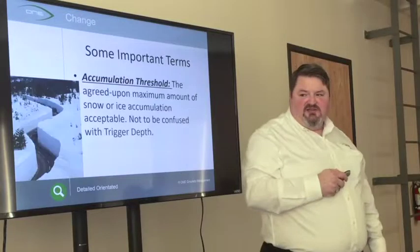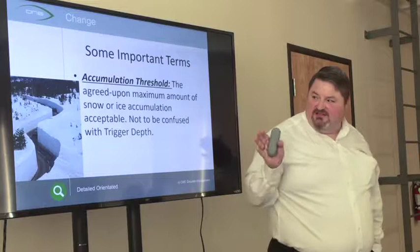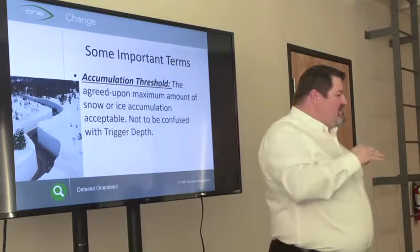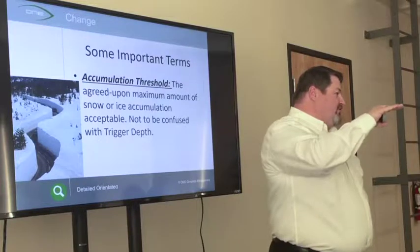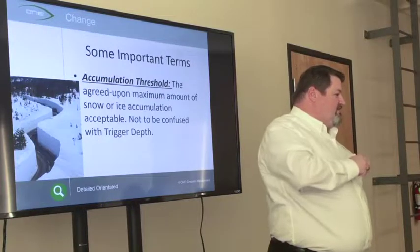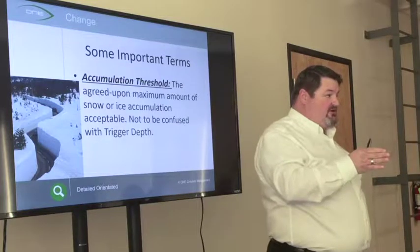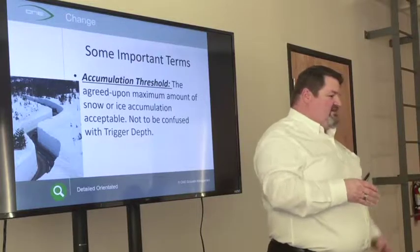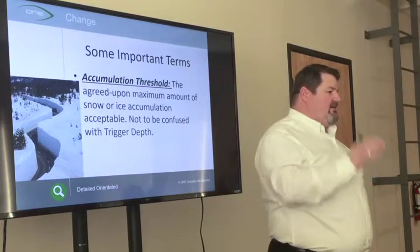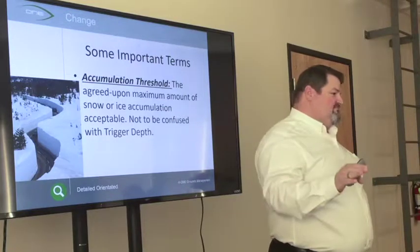Accumulation Threshold is basically the amount of snow we can tolerate — don't let it go beyond that point. For example, one of our clients has a two-inch accumulation threshold and a one-inch trigger. So as soon as it hits one inch they want you to plow, and they don't want you to ever let it get over two inches.